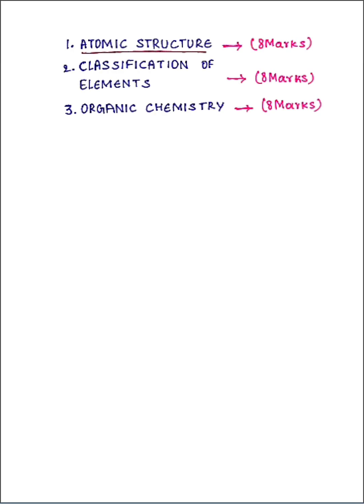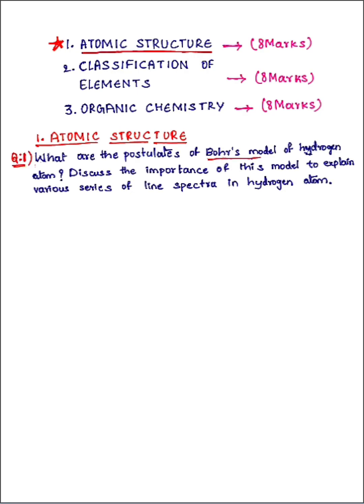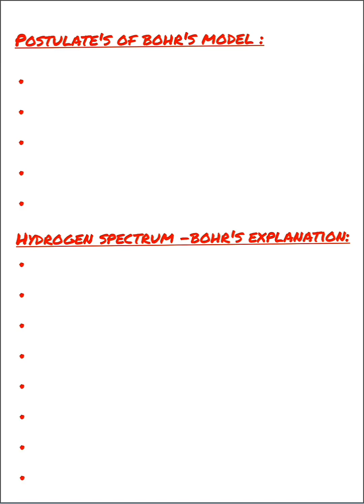Let's start with the first chapter, atomic structure. There are three important eight mark questions in this chapter. The first question is: what are the postulates of Bohr's model of hydrogen atom and discuss the importance of this model to explain various series of line spectra in hydrogen atom? Your answer should include a heading 'Postulates of Bohr's Model' with at least five points, followed by seven to eight points on Bohr's explanation of the hydrogen spectrum.